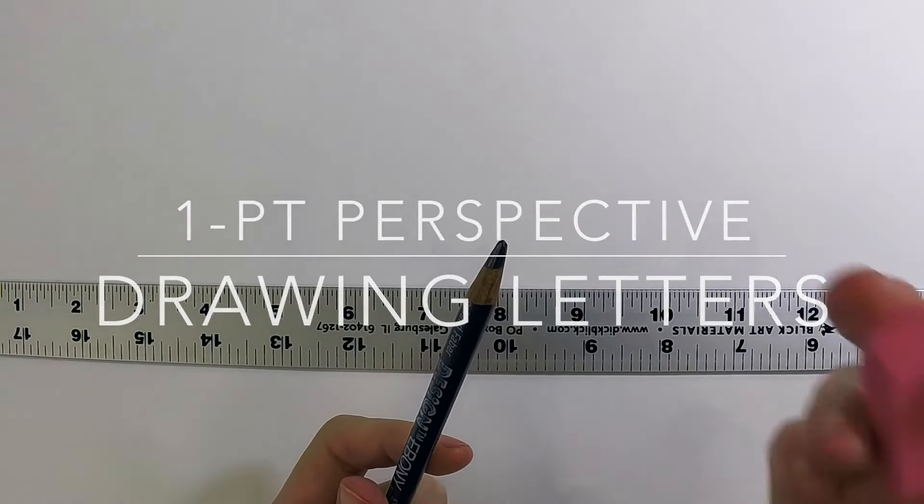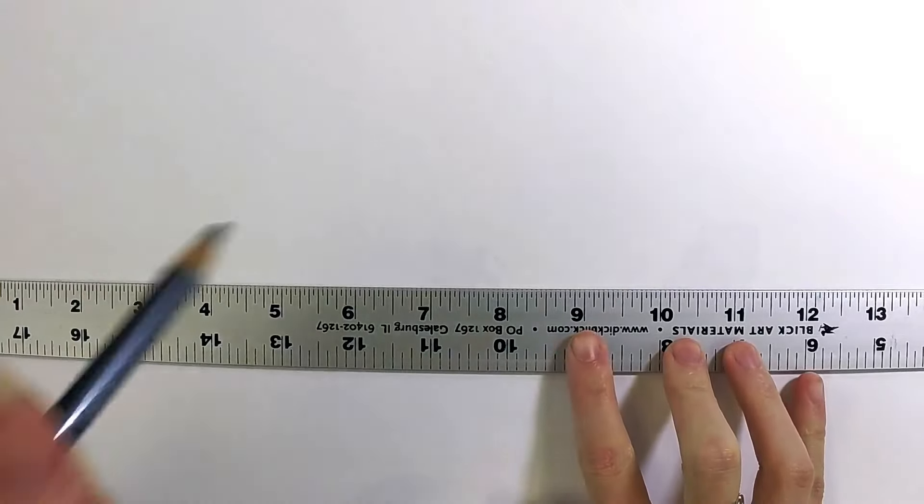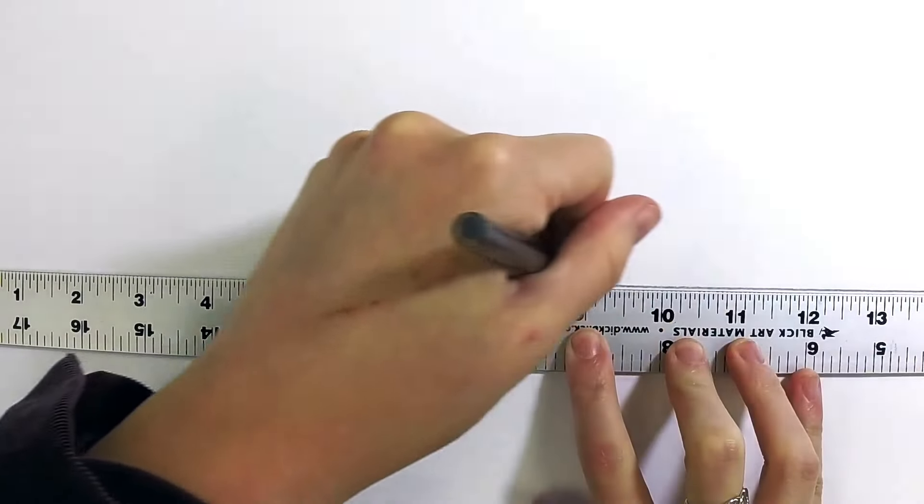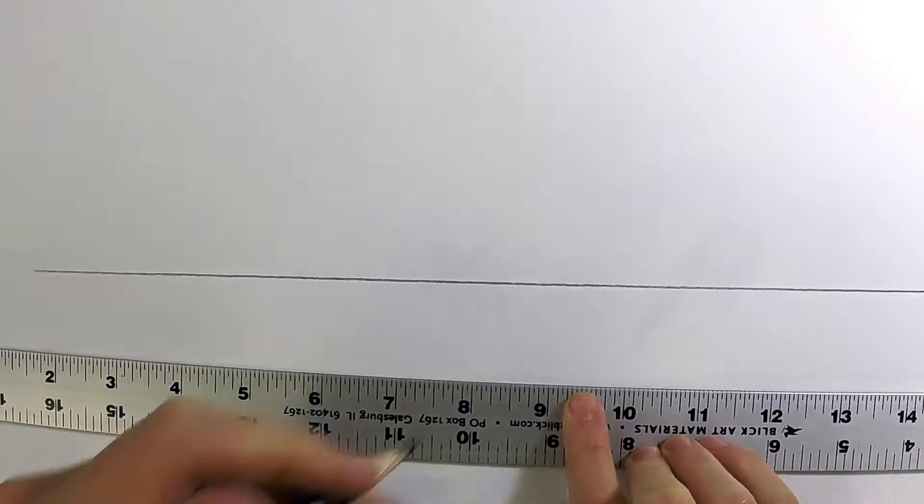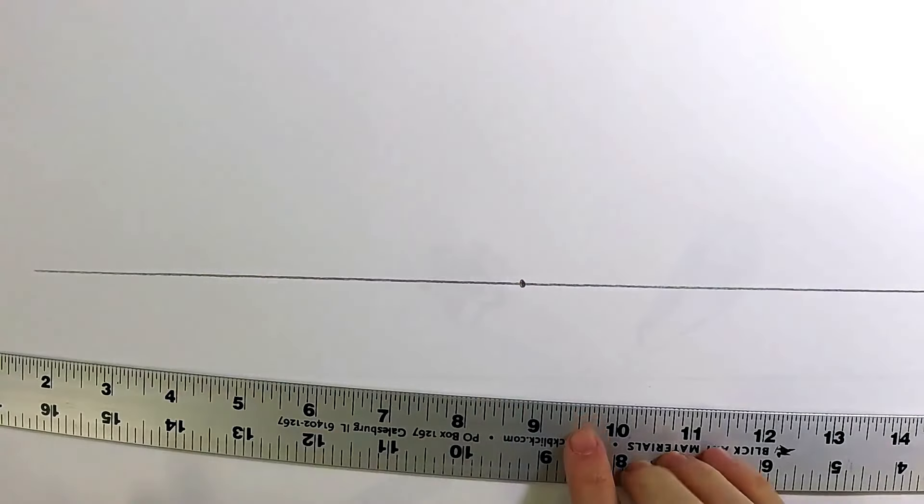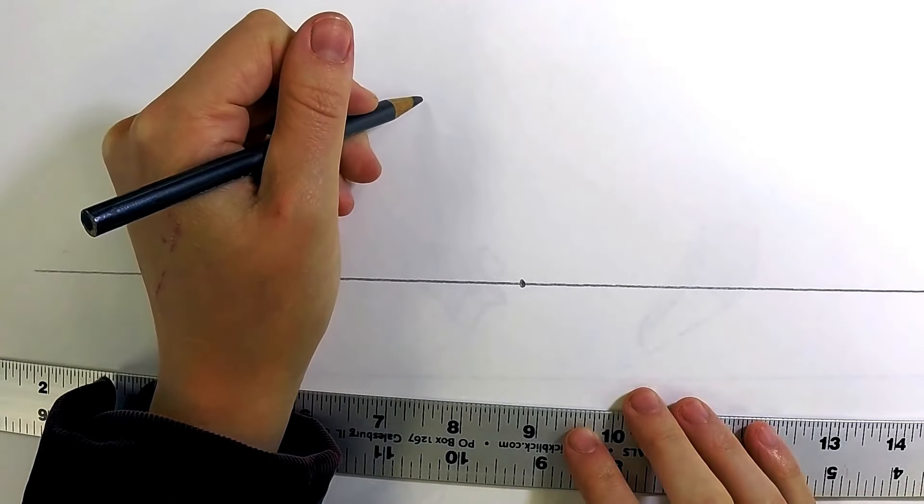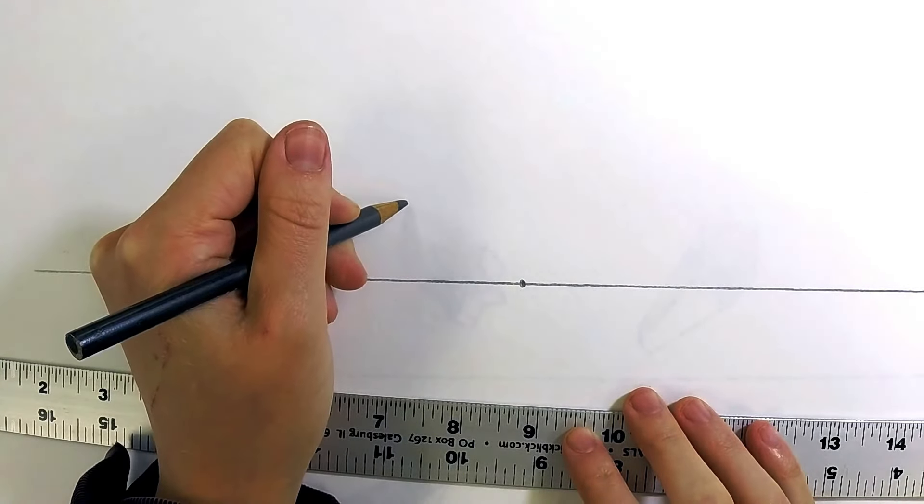In this tutorial we're going to be talking about drawing letters with one point perspective. So what we're going to begin with is the usual. We'll start with a horizon line somewhere on our page and a vanishing point somewhere on the horizon line. Next up I'm just going to draw some letters. We'll do some block letters of a variety of shapes.